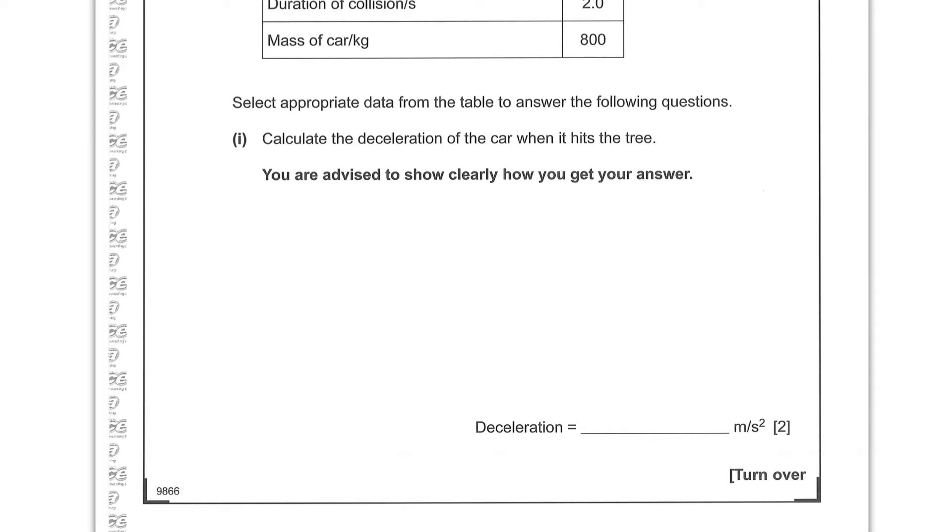It says here, calculate the deceleration of the car when it hits the tree. You're advised to show clearly how you get your answer. So we have a car that goes from a value of moving to a value of no speed over a time. We also have a force and a mass. And accelerations can be got by a is equal to f over m. So from Newton's second law, it's possible for us to write an expression for the acceleration that a is f over m. So f over m, 12,000 over 800, gives us 15 meters per second squared for the deceleration.